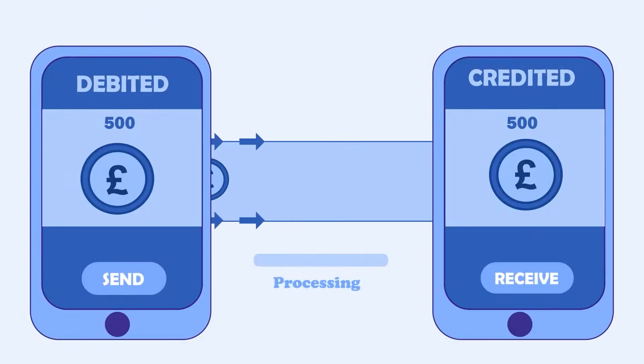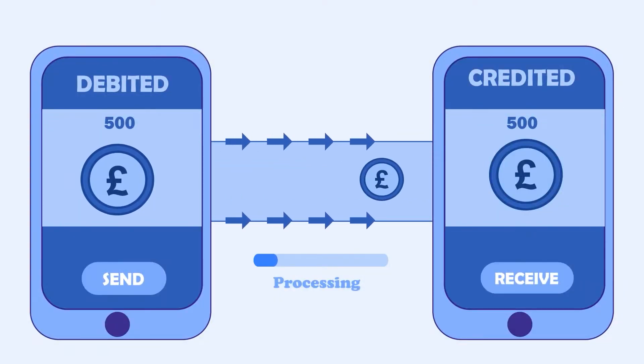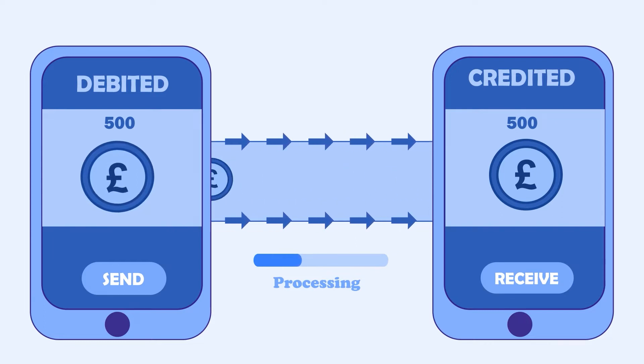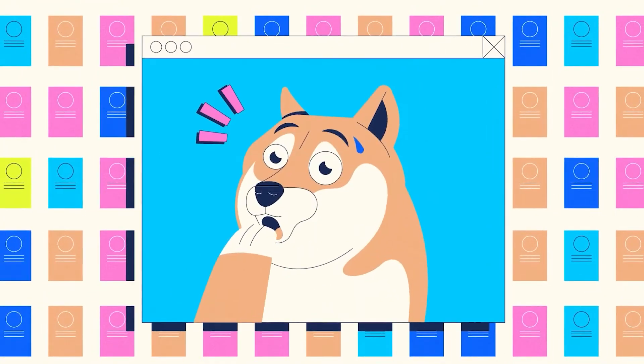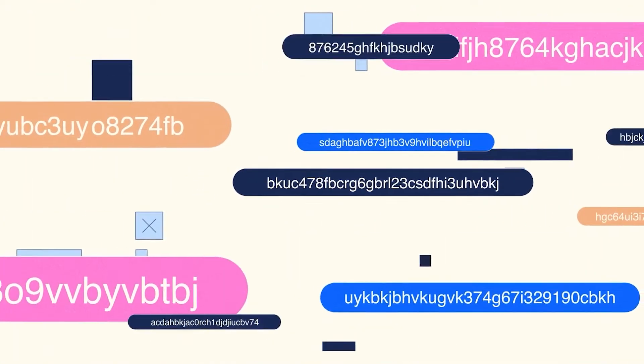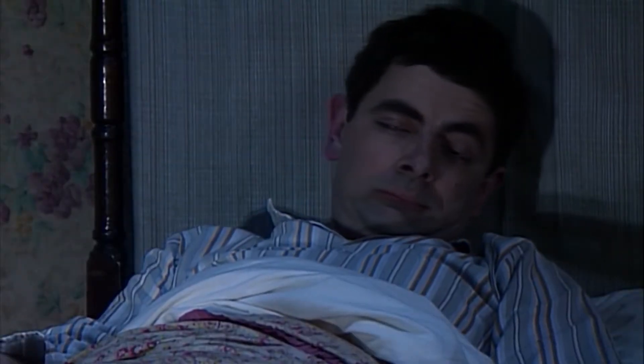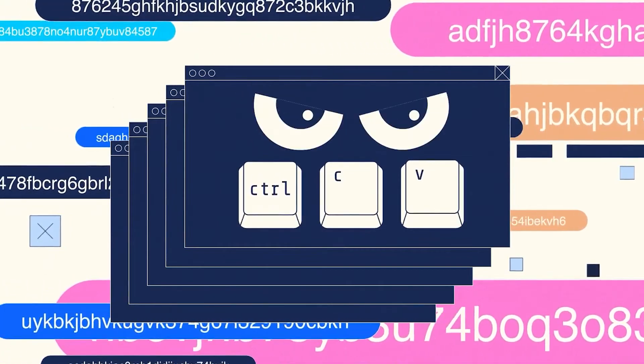For example, when you want to receive crypto payments from someone else you would currently have to give them a really long crypto address, and often there would be a different wallet address for each different blockchain network. Like you could have a bitcoin wallet address, an ethereum wallet address, a cardano wallet address, a cronos wallet address, which is tiresome and cumbersome. I certainly do not remember any of my wallet addresses and I'm constantly worried that I copied and pasted the address wrong.